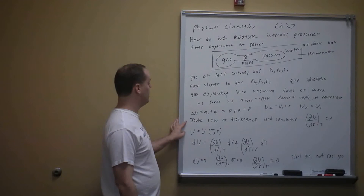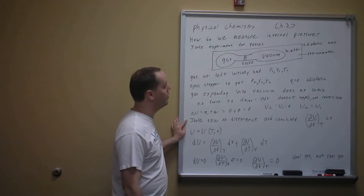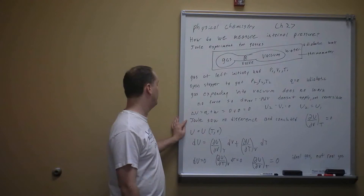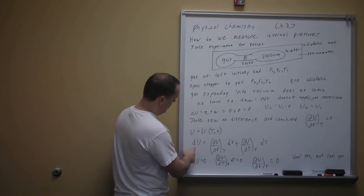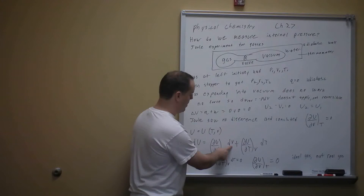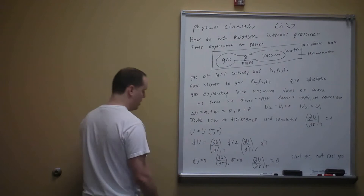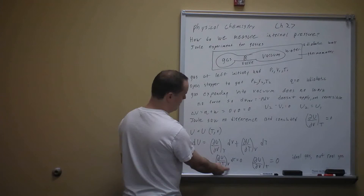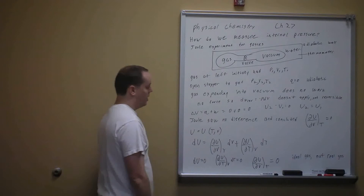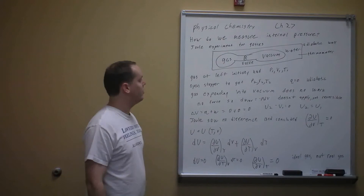Joule observed no temperature change in the water, so he concluded that dU/dV at constant T equals zero. Writing the exact differential of U as a function of T and V: dU equals dU/dV at constant T times dV, plus dU/dT at constant V times dT. Since dU equals zero for this experiment and dU/dT at constant V times dT also equals zero, the other term must be zero as well. This holds for an ideal gas — his experiment wasn't sensitive enough to detect the deviation for real gases.